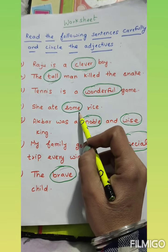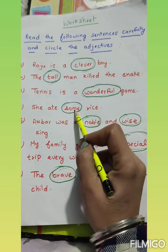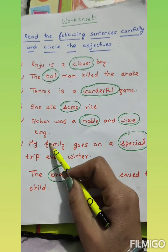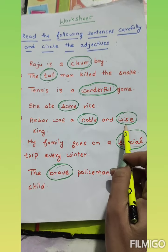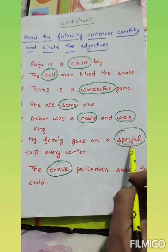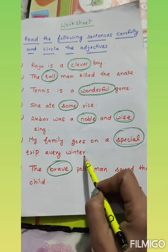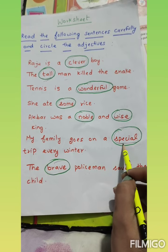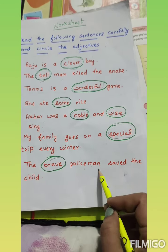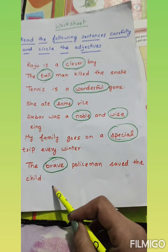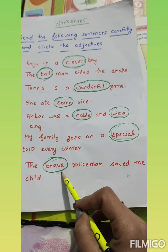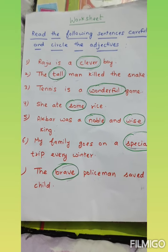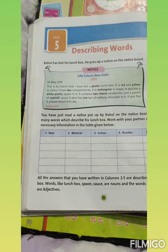She ate some rice. Usne rice khaya kitna? Kuch rice. To 'some' kya hai? Adjective. Akbar was a noble and wise king — Akbar kaisa tha? Noble and wise. My family goes on a special trip every winter — special word kya hai? Adjective. The brave policeman saved the child — kaisa policeman? Brave. To brave kya hai? Adjective. So adjective kya hote hain? Aise words jo noun ya pronoun ki visheshita batate hain.